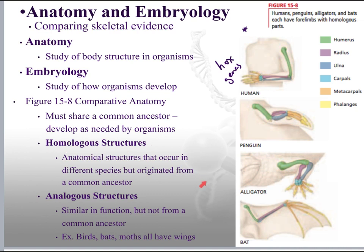Then we have analogous structures — not from the same common ancestor but serving a similar function. Birds, bats, and moths all have wings, but birds and bats have bones in their wings while moths don't. They all developed wings because at some point there was an advantage to getting off the ground. It does not mean they all have the exact same ancestor — they just have a similar function. That's an analogous structure: something similar but not necessarily exactly the same.